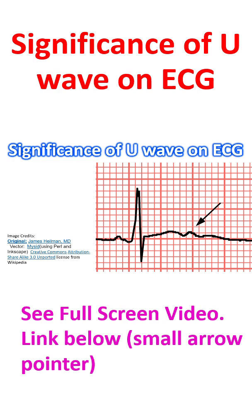U wave on ECG occurs after the T wave and is usually seen in the mid precordial leads. In hypokalemia, T waves become flattened and U waves become prominent, or apparently so, because of near absence of T waves.